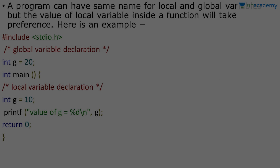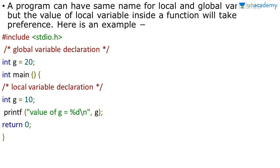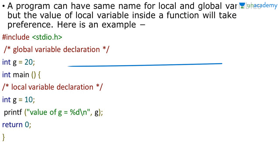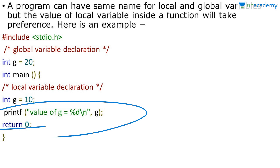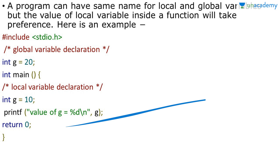We can also write a program where the local and global variable share the same name. For example, the global variable g is set to 20, but we also declare a local variable g as 10. Inside the function, the local variable takes preference over the global variable, so when we print, the value 10 will be printed.